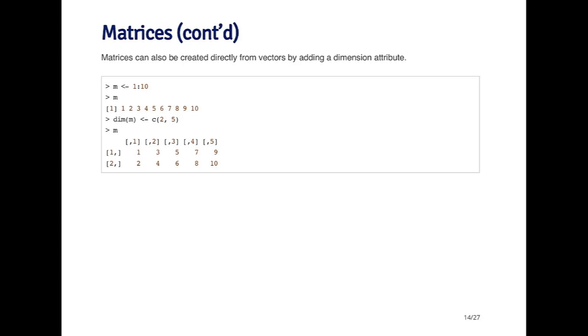but I'm assigning a value to the dim attribute of M. Here I'm assigning the vector two, five, which means I want to take this vector and transform it into a matrix that has two rows and five columns. After I've done that, I've got a matrix M which has two rows and five columns, and it's filled in column-wise.